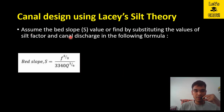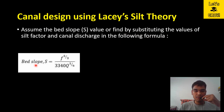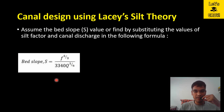To calculate the bed slope S, substitute the values of silt factor f and canal discharge Q into the formula: S = f^(5/3) / (3340 × Q^(1/6)). Since Q and f are both known, you can directly calculate the slope of the canal using this expression.